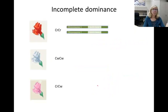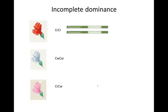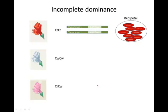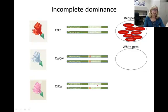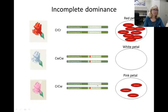If a snapdragon plant has two copies of the working CR allele, it makes lots of red anthocyanin and the flower is red. If a snapdragon plant has two copies of the mutant allele, it makes no red anthocyanin and the flower is white. If a snapdragon is heterozygous, it makes a small amount of the pigment because it has a small amount of the enzyme, and the flower is pink.